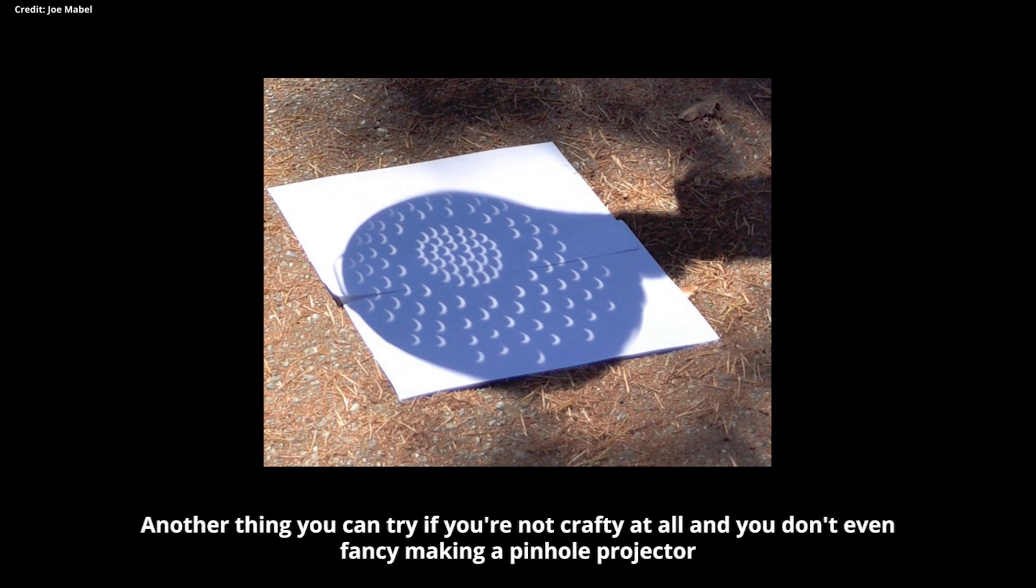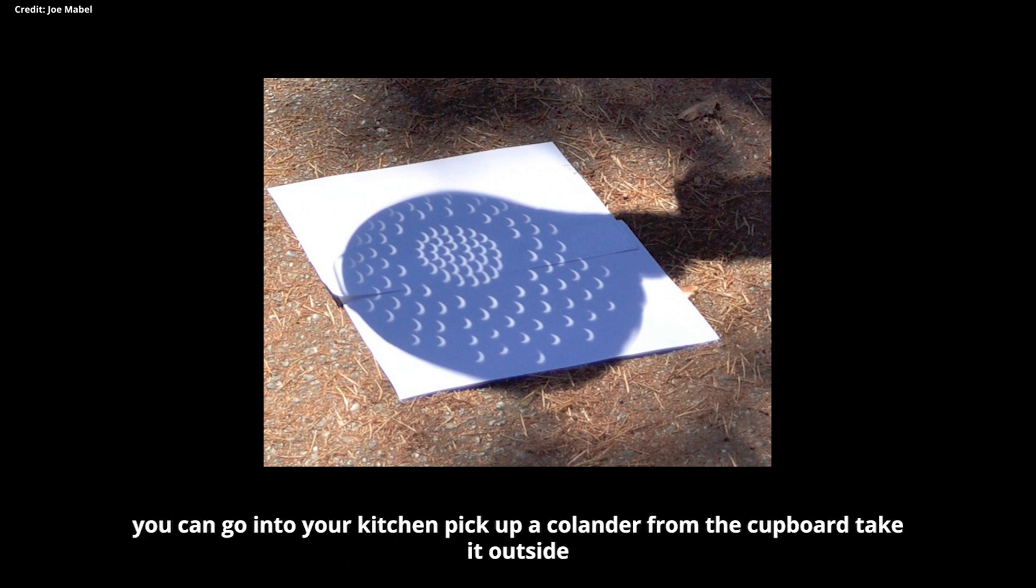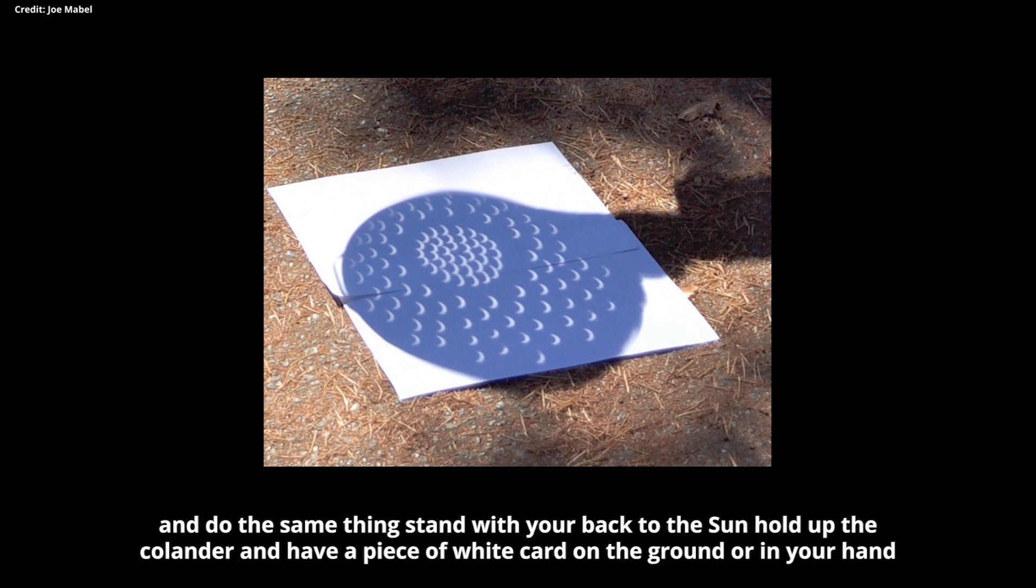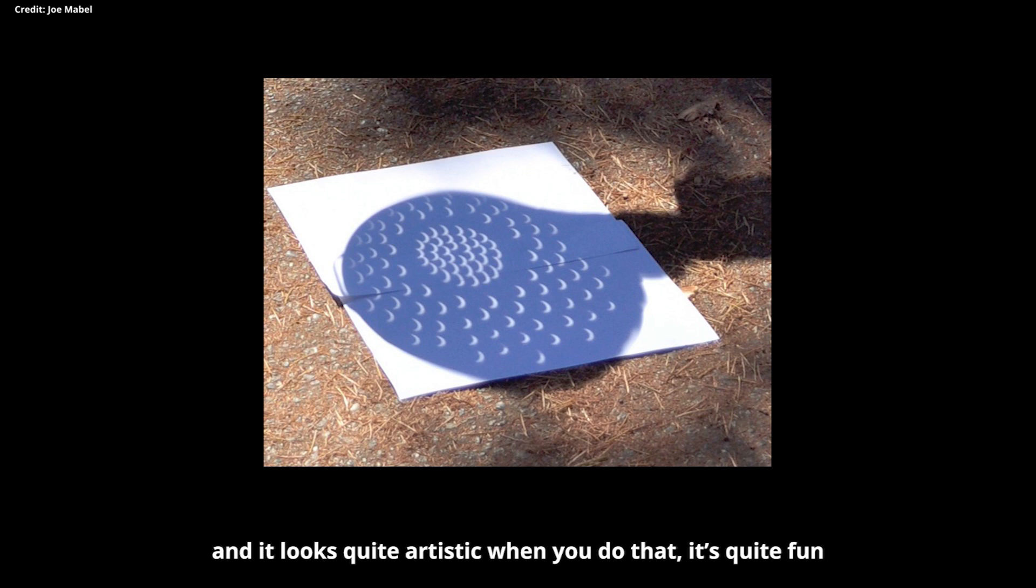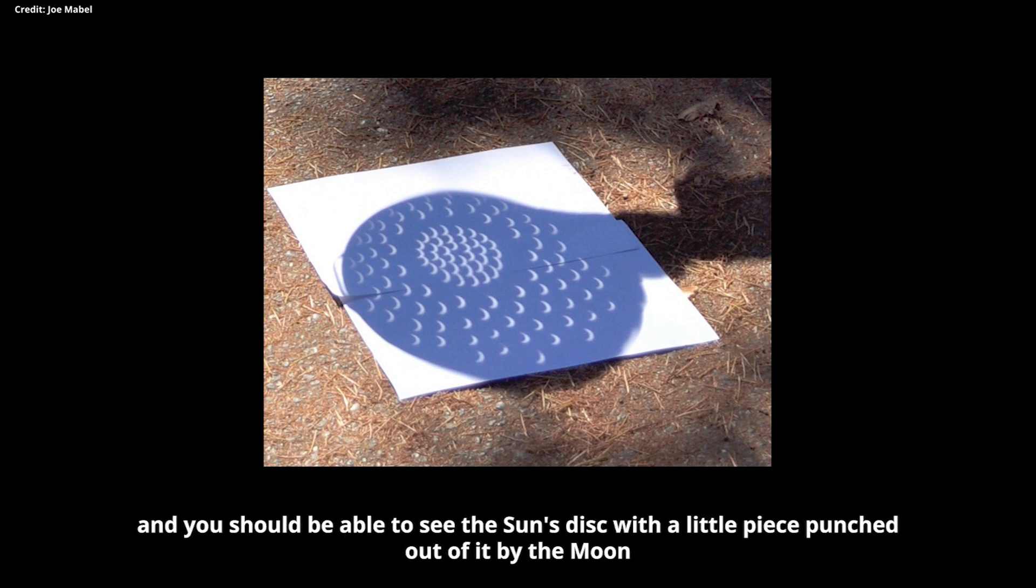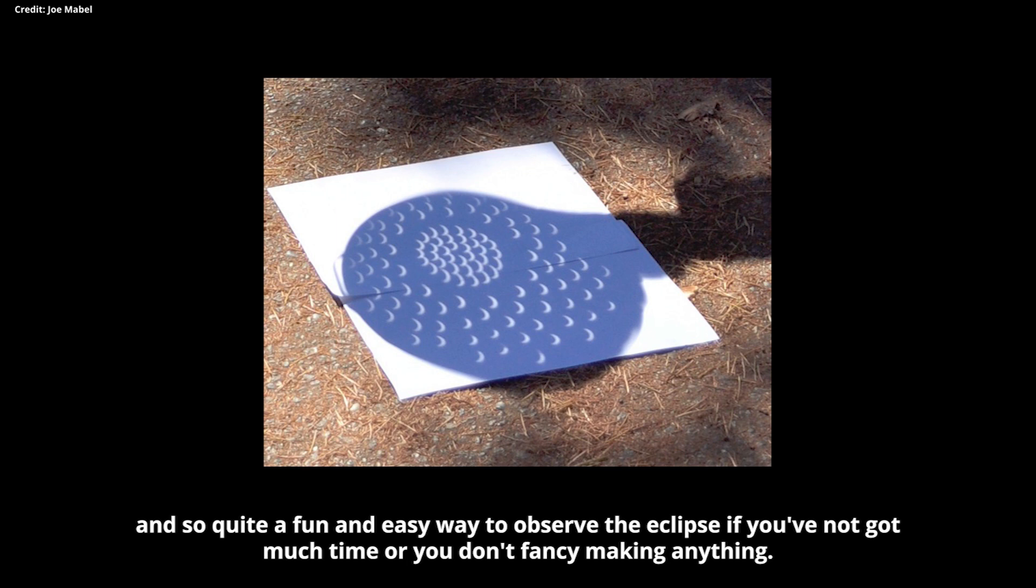Another thing you can try if you're not crafty at all and you don't even fancy making a pinhole projector, you can go into your kitchen, pick up a colander from the cupboard, take it outside and do the same thing. Stand with your back to the sun, hold up the colander and have a piece of white card on the ground or in your hand and see if you can project multiple images of the sun through the holes of your colander onto your card. And it looks quite artistic when you do that. It's quite fun and you should be able to see the sun's disc with a little piece punched out of it by the moon. So quite a fun and easy way to observe the eclipse if you've not got much time or you don't fancy making anything.